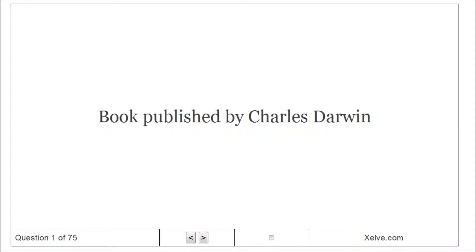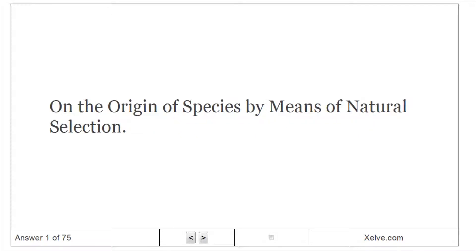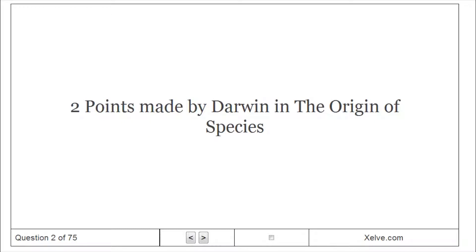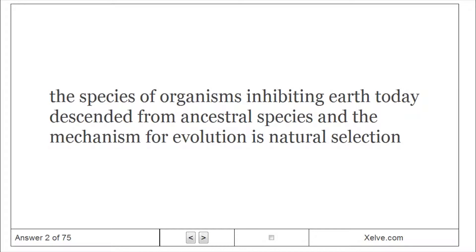Book published by Charles Darwin: On the Origin of Species by Means of Natural Selection. Two points made by Darwin in the Origin of Species: The species of organisms inhabiting Earth today descended from ancestral species, and the mechanism for evolution is natural selection.